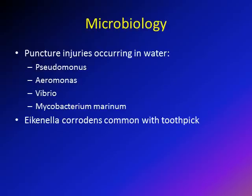Puncture wounds through stagnant water may be associated with Pseudomonas, Aeromonas, Vibrio species, or Mycobacterium marinum. For puncture wounds through a bitten toothpick, Eikenella corrodens, a common organism in the human mouth, is a common cause of infection in these children.